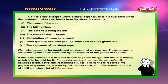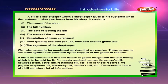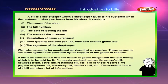We make payments for goods and services that we receive. These payments are made against bills produced by the supplier of the goods or services. A bill is an account that lists the details of goods bought and the total money which is to be paid for it.